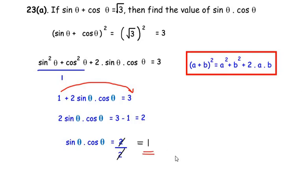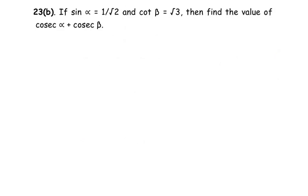Let us move on to the OR question now. If sin alpha is equal to 1 over root 2 and cot beta is equal to root 3, then find the value of cosec alpha plus cosec beta.